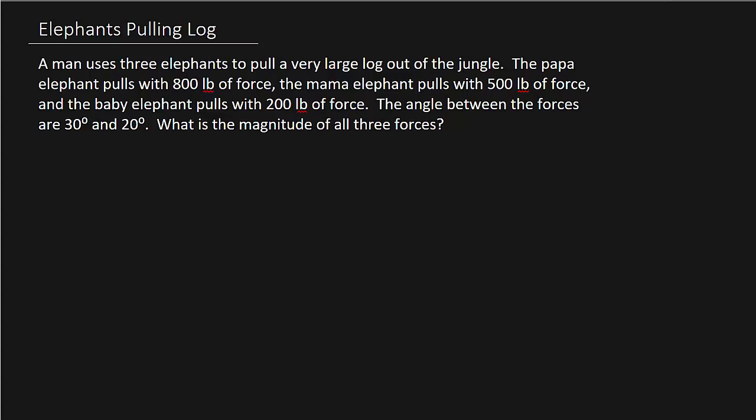A man uses three elephants to pull a very large log out of the jungle. The papa elephant pulls with 800 pounds of force, the mama elephant with 500 pounds of force, and the baby with 200 pounds of force. The angle between the forces are 30 and 20 degrees — the 30 degrees is the angle between the papa and mama elephant, and the 20 degrees is between the mama and baby elephant.